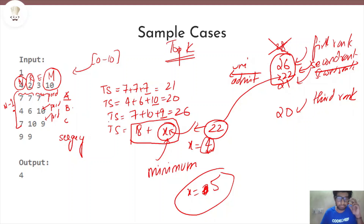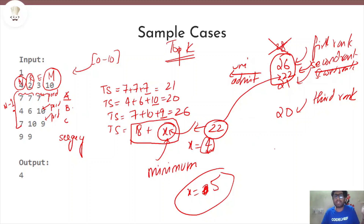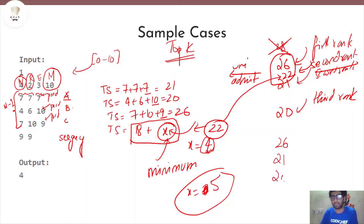How will we solve this problem? We are supposed to find the minimum X. What we're going to do is sort the scores in descending order. After sorting in descending order we get 26, 21, 20. We know that 18 plus X is Sergei's value. We need to find the value of X — specifically, what is at the Kth position currently.